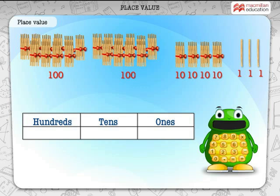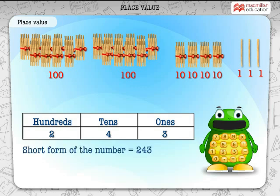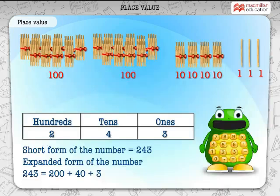Write down the correct numeral in the hundreds place, the tens place and in the ones place. What is the short form of the number shown here? 243. What is the expanded form of the number? 243 is equal to 200 plus 40 plus 3.